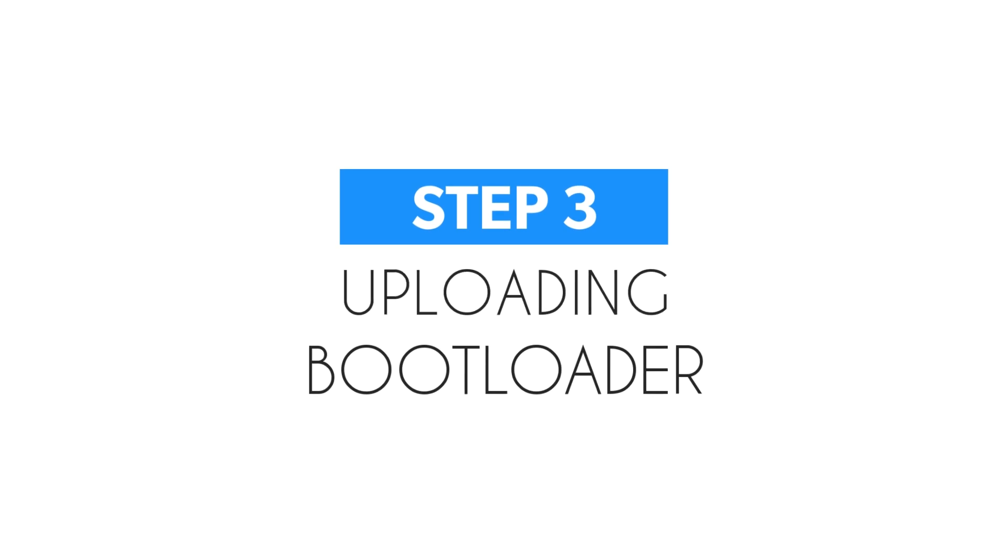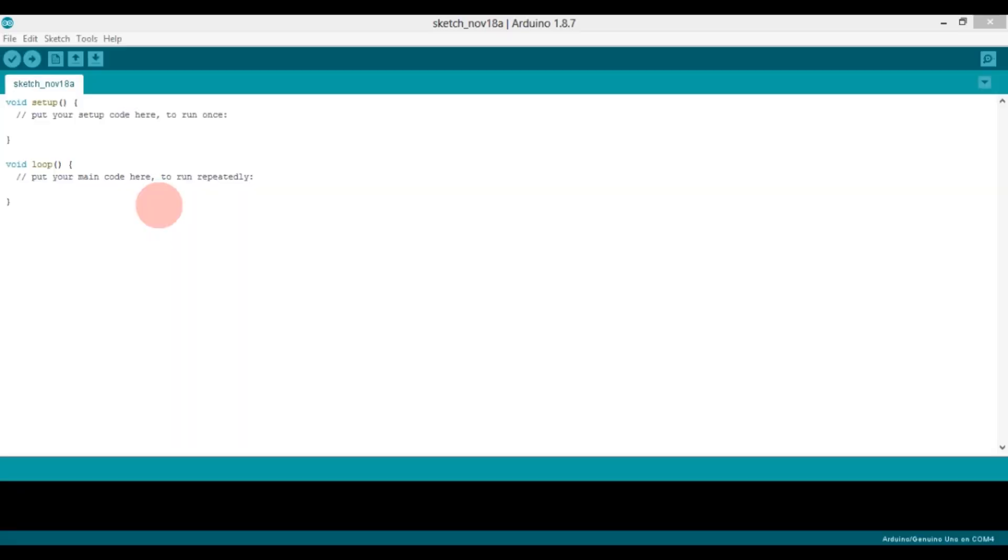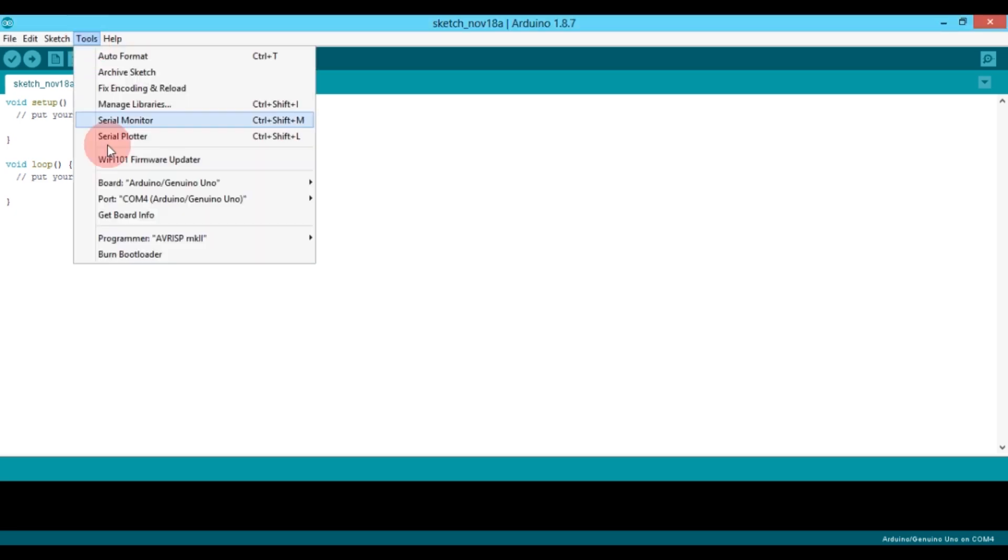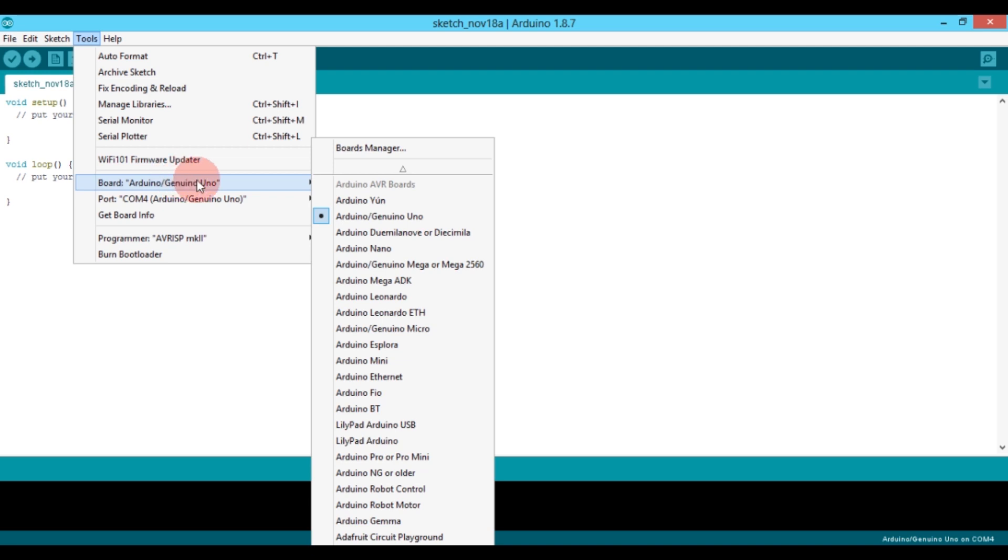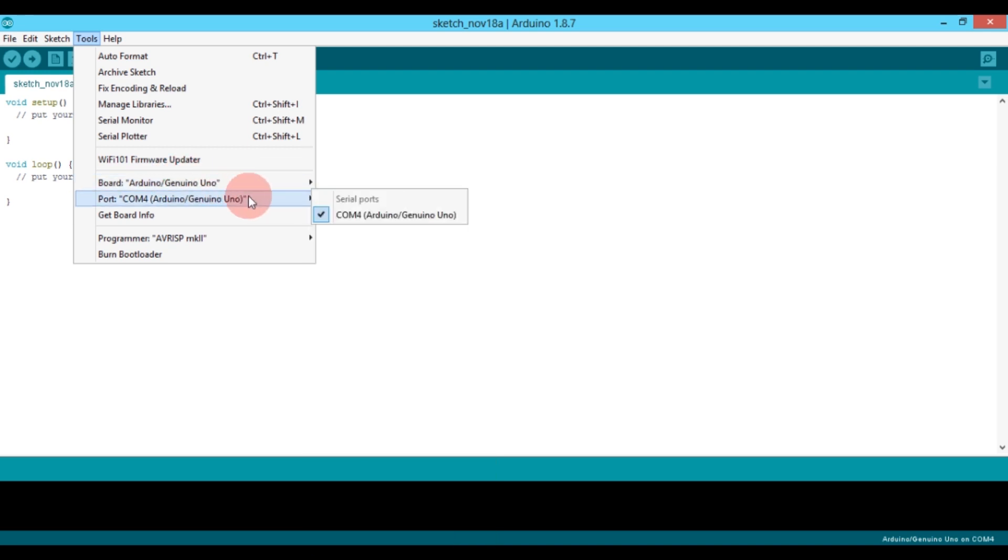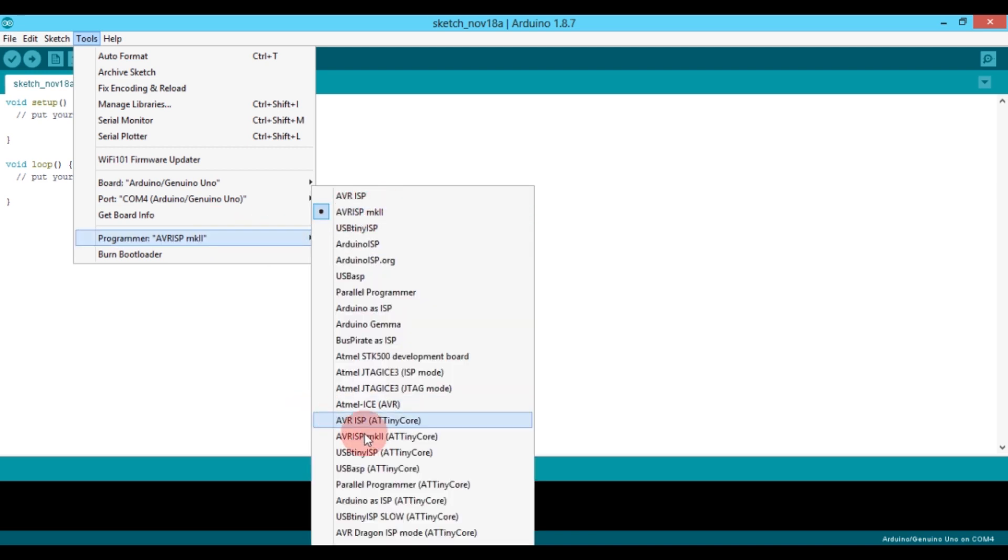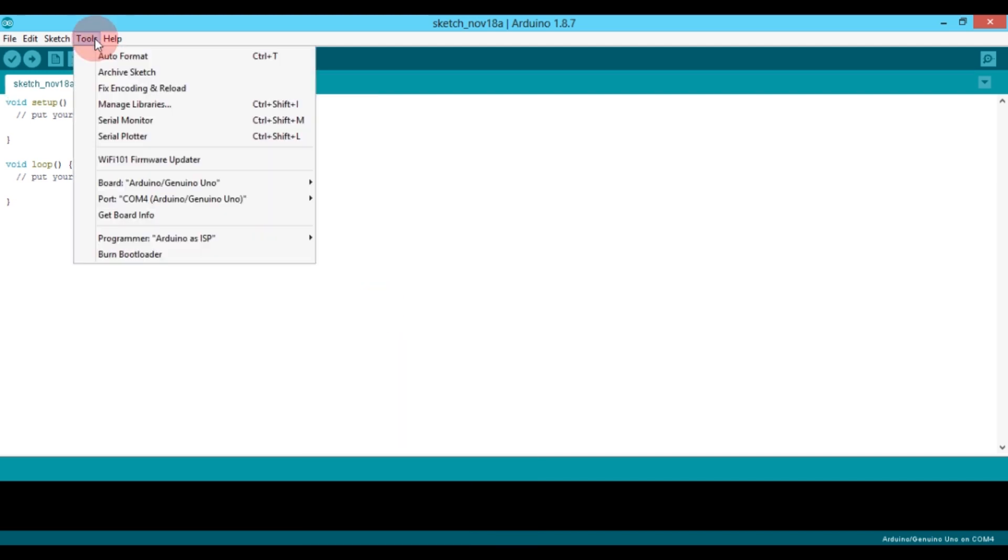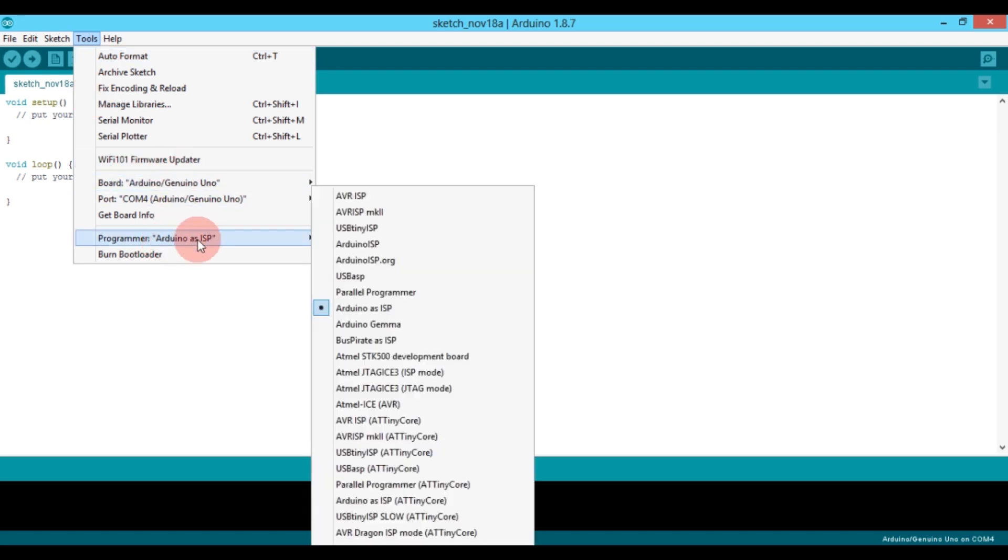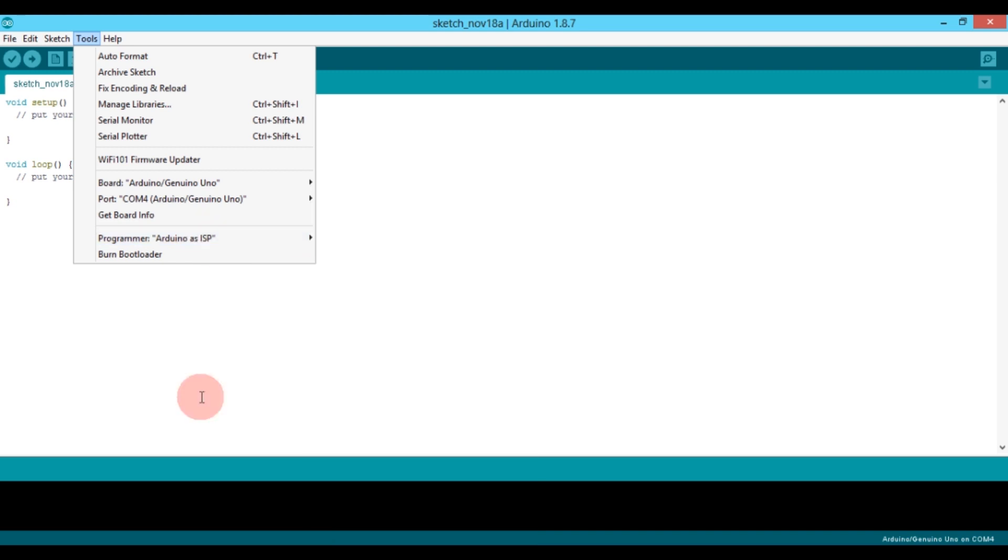Step 3 is uploading bootloader. For uploading bootloader, first select the necessary board settings. After selecting the board setting, click on burn bootloader.